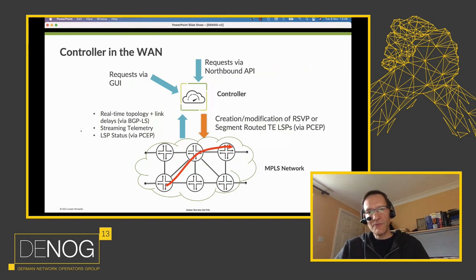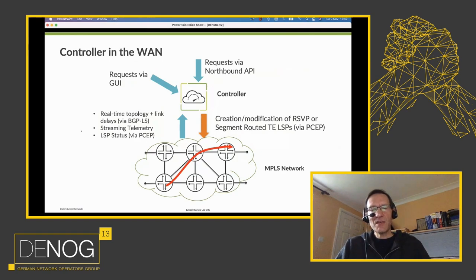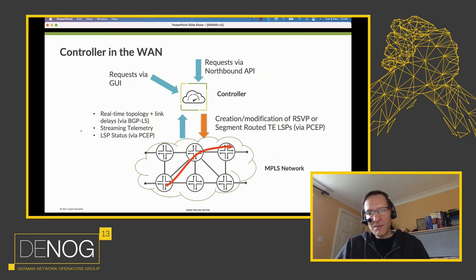These controllers typically have a graphical UI for human interaction and a REST API northbound to talk to an orchestrator if one is being used. The controller makes decisions about the paths that traffic-engineered LSPs ought to take across the network — doing path computation based on the different inputs it receives. It can then create LSPs using the PCEP protocol, signaling to the ingress router the precise path it wants the LSP to follow. That LSP can be either segment-routed or RSVP — it works either way.